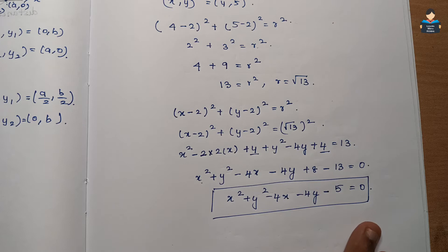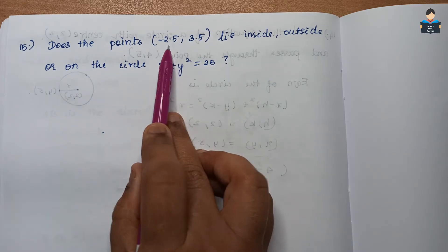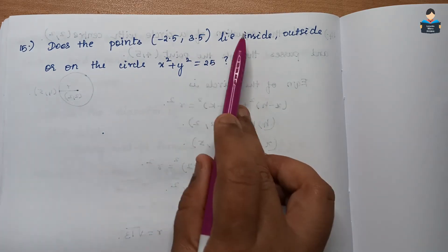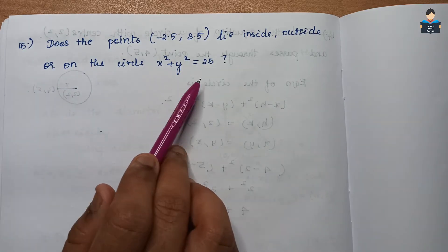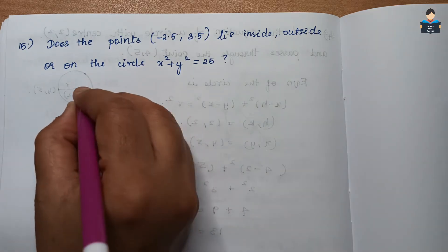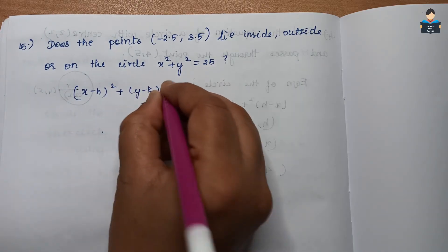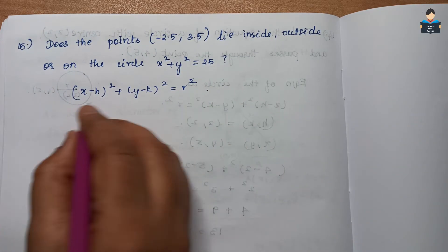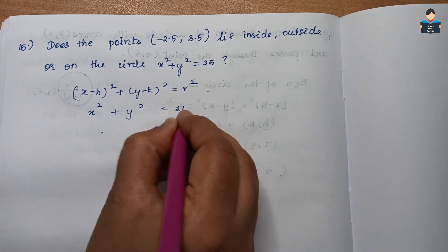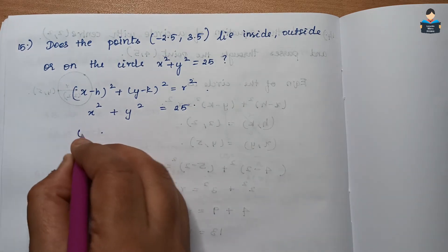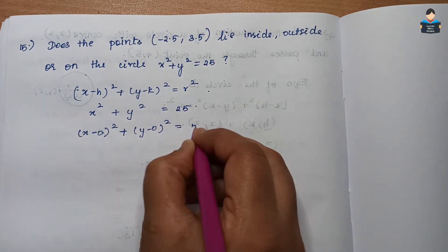Moving on to Question 15: Does the point (-2.5, 3.5) lie inside, outside, or on the circle x² + y² = 25? The equation of the circle is x² + (y - 0)² = 5², so h = 0 and k = 0, meaning the center is (0,0) and the radius r = 5.